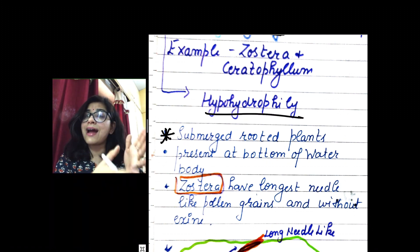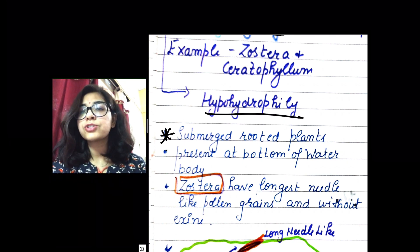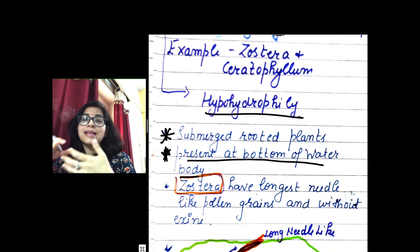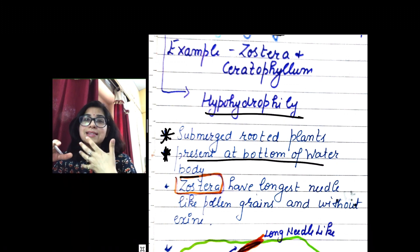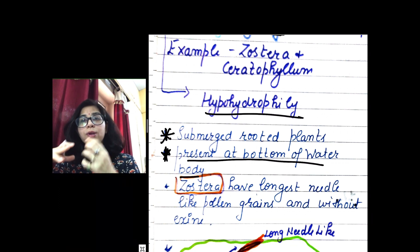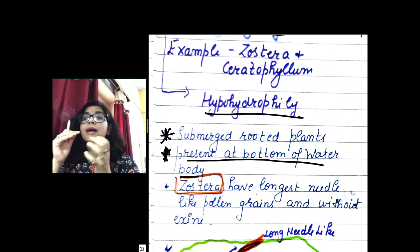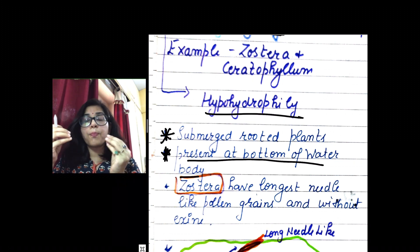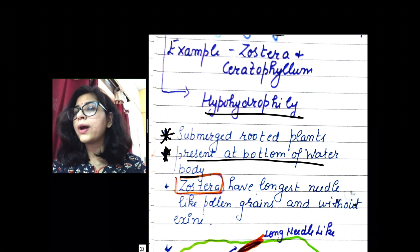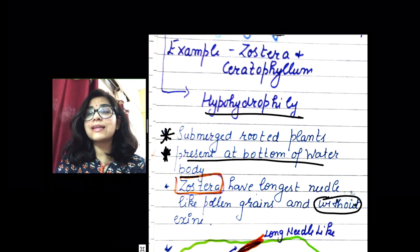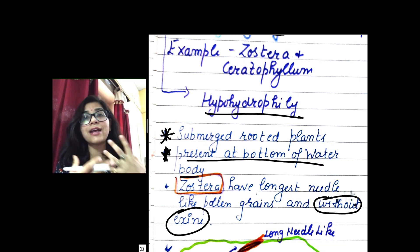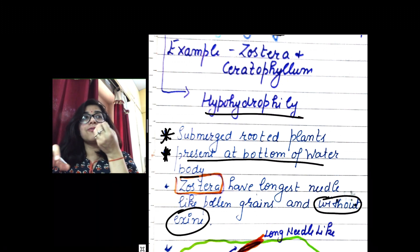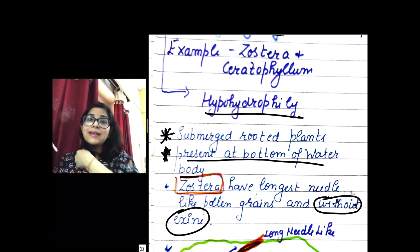Second point: they are present at the bottom of the water body because they are submerged. Third, as given in your NCERT, they have a special kind of pollen grain. Zostera is an aquatic plant with the longest needle-like pollen grains, and one major special feature — these pollen grains are without exine, the outermost covering of a pollen grain.